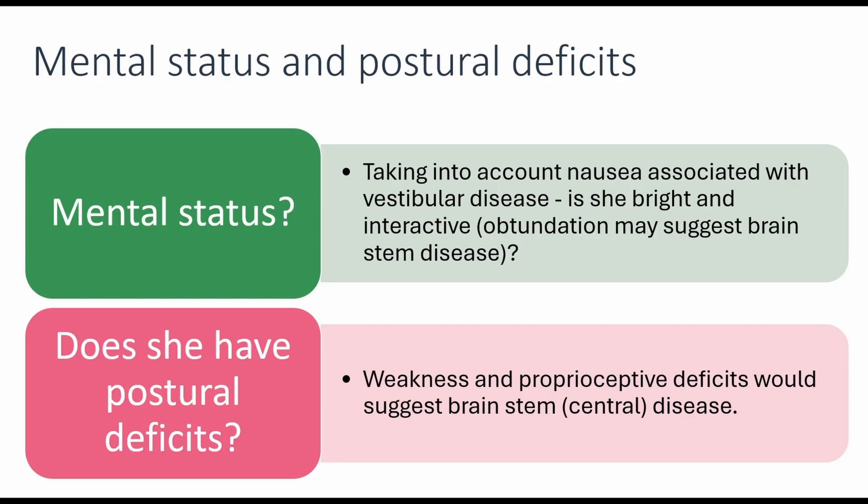This has very important prognostic implications — a problem with the brain is so much more serious than a problem with the nerve or ear. The most important tests for determining central versus peripheral vestibular or facial nerve disease are mental status and postural reactions. When dogs are affected by acute vestibular disease they won't be very bright, simply because vestibular disease results in a lot of nausea. If a dog is just rolling and unable to stand, it can be better to let them settle for a couple of hours so they can work out which way is up, then assess again.